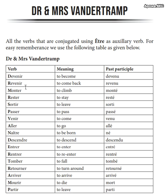These verbs will all be conjugated with être as the auxiliary. Earlier you have observed that to write a passé composé, you will be using avoir as an auxiliary — that is pronoun plus past participle — and we put avoir as the auxiliary in between.